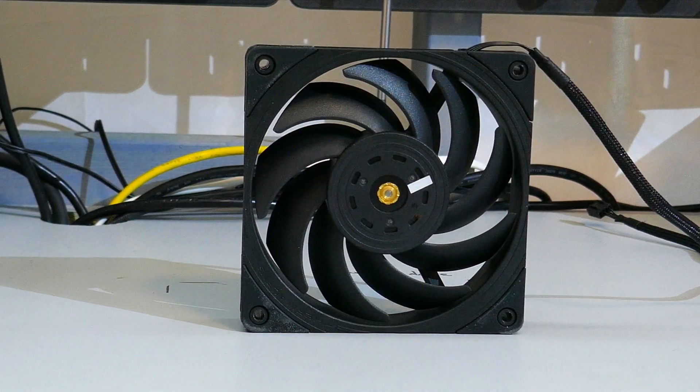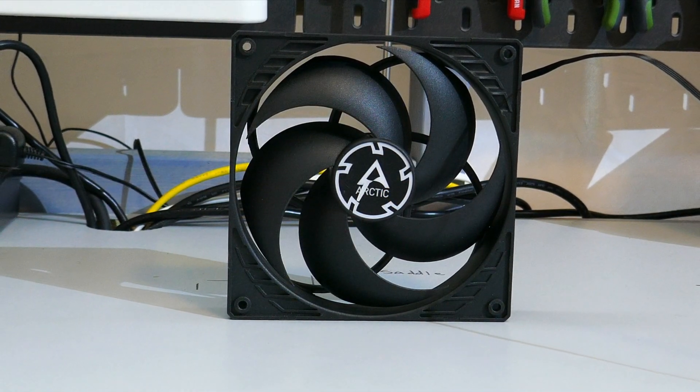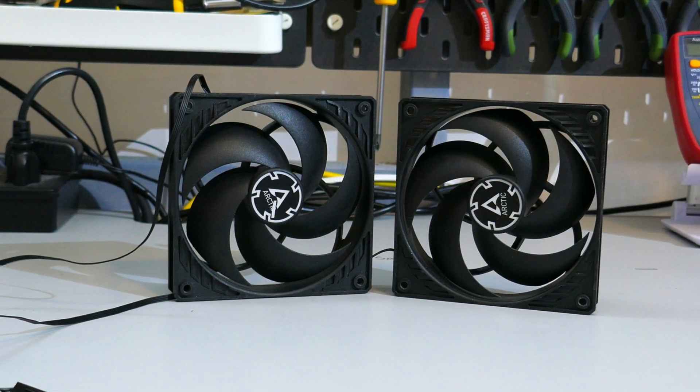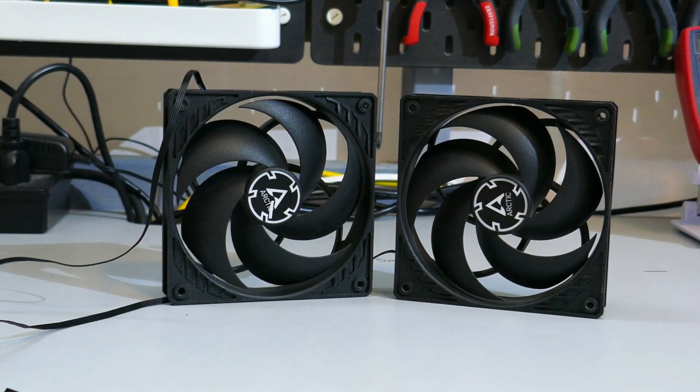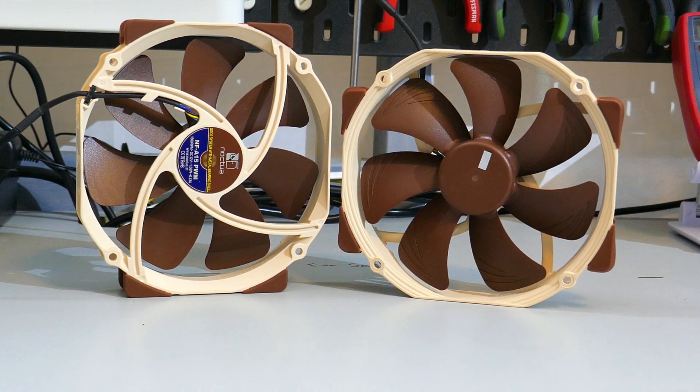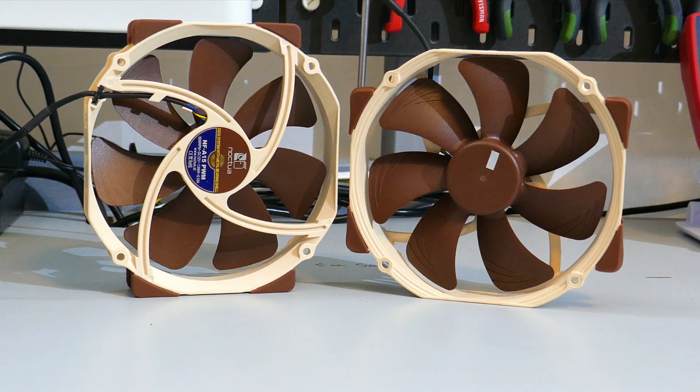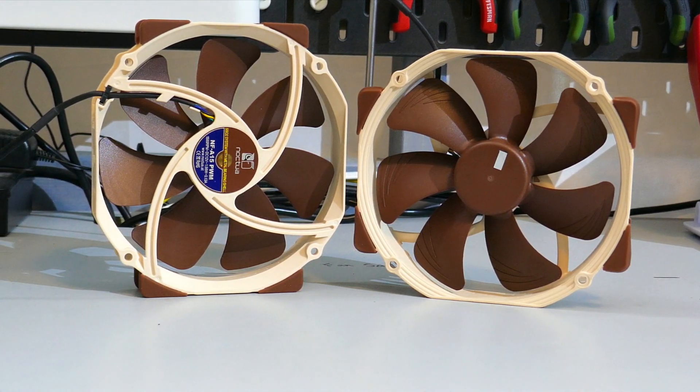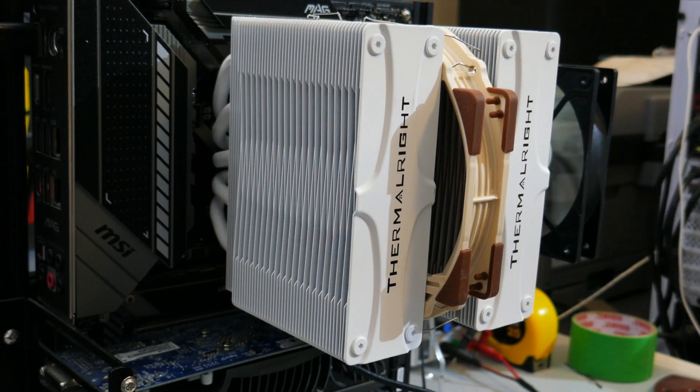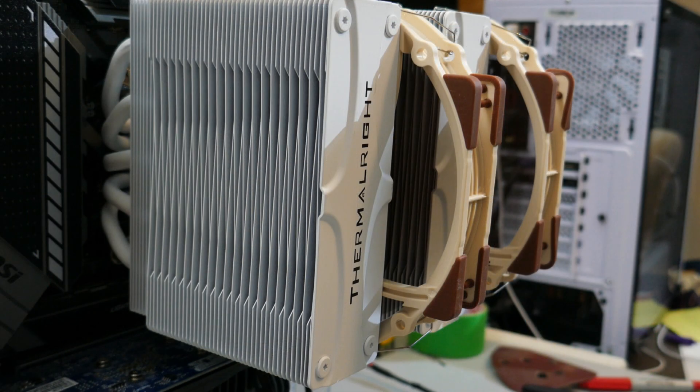Once those were done, I tested the Thermalright B12 Extreme, the Arctic P14 PWM, then two Arctic P12 PWM PSTs, and finally I tested the Noctua A15 in both dual and single fan configurations. However, because of the odd shape of the A15, I did have to rotate the fans to get them to fit on the Frost Commander. So something to keep in mind when looking at the chart.